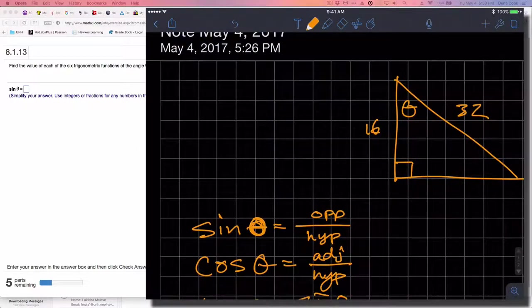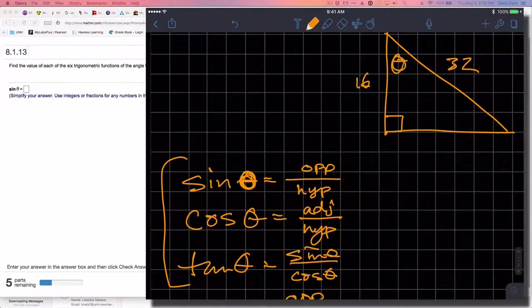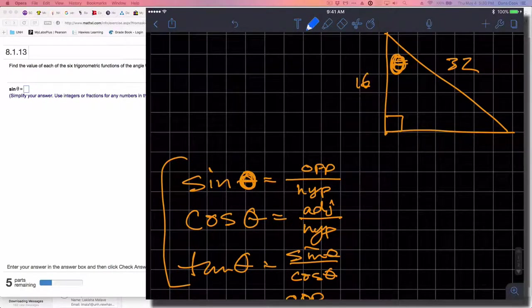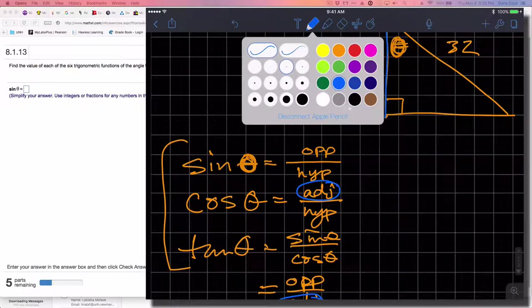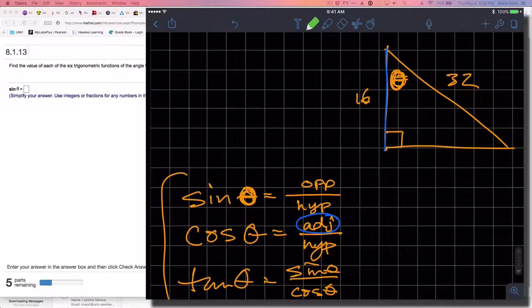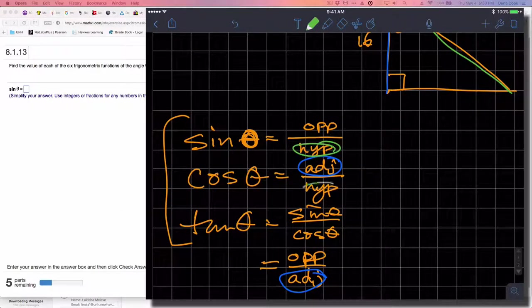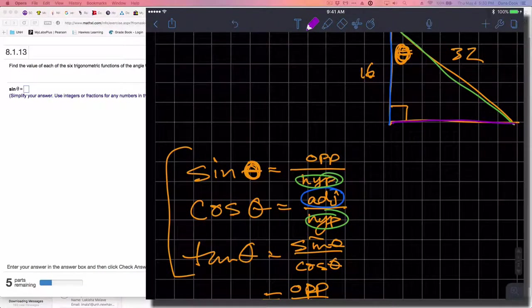To focus on these first three, I have theta here. The leg that is adjacent is this one, and the hypotenuse is here. But I'm missing the length of the opposite leg, this side that's opposite the angle.